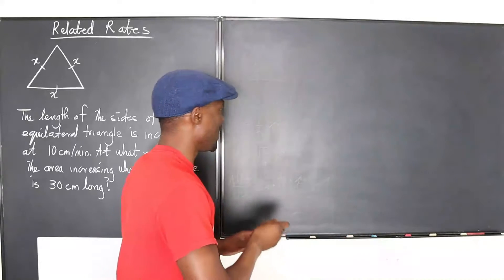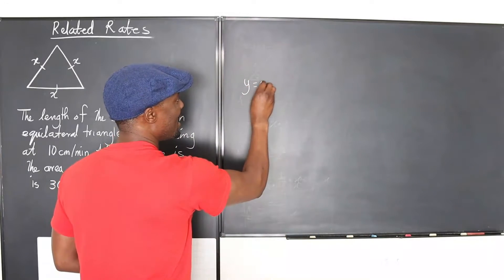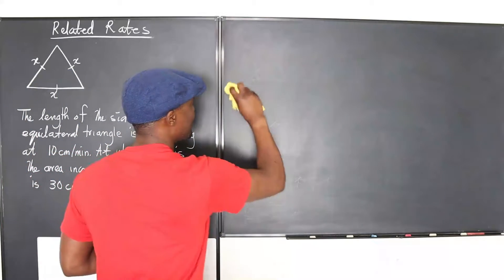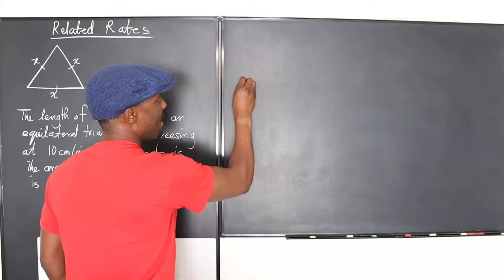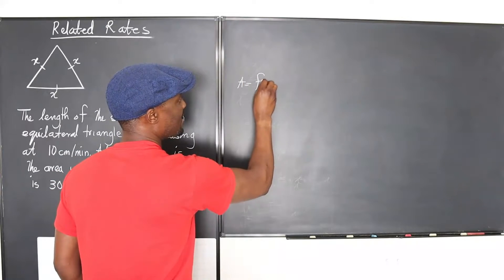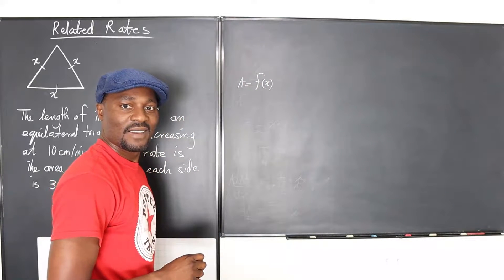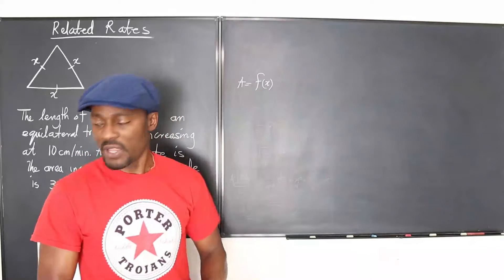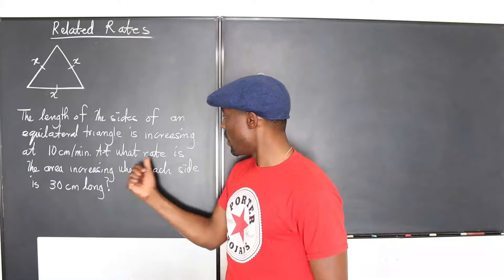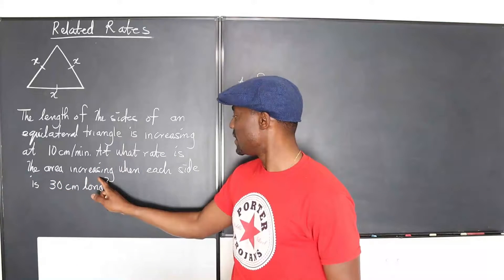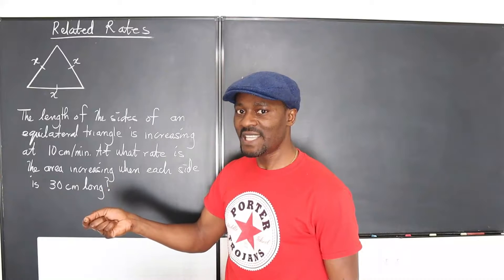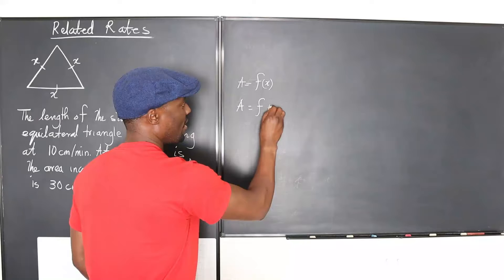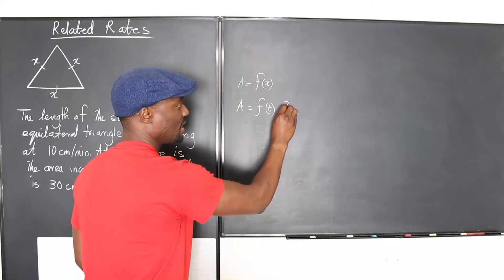So the area is a function of x, but you're not looking for the relationship between the area and x. That's not the question. The question is asking at what rate is the area increasing - that's dA/dt. So we're looking for A as a function of time. That's what we're looking for.